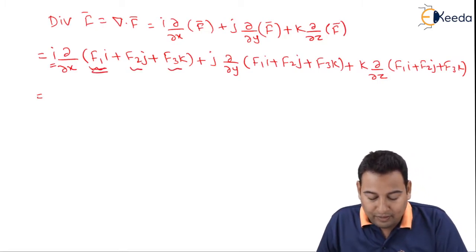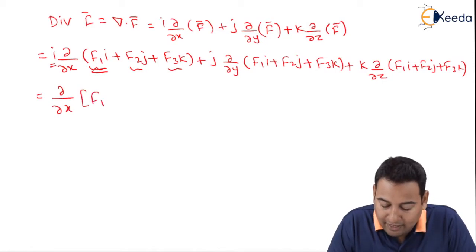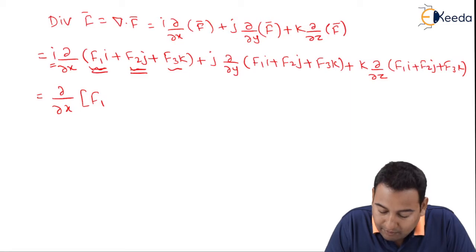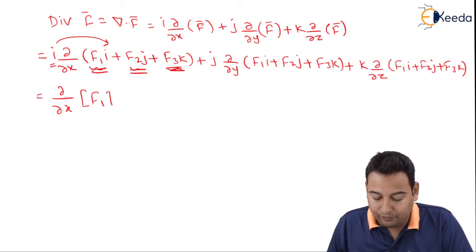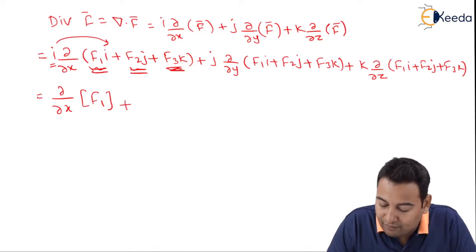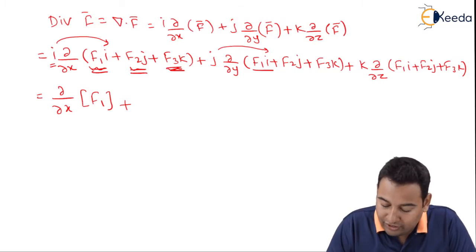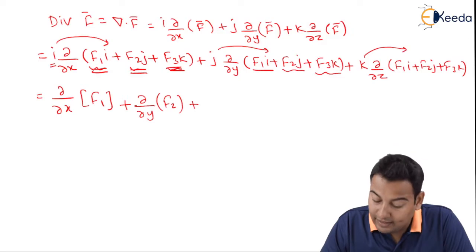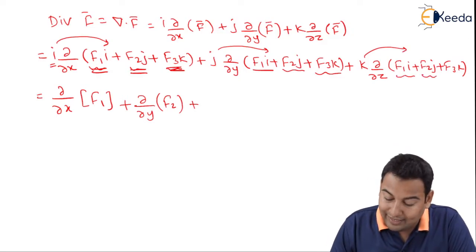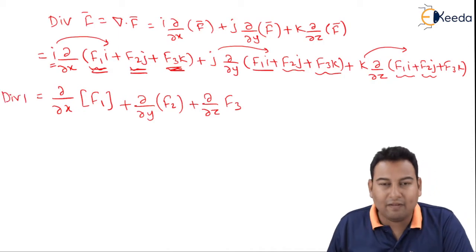Opening the bracket: i multiplied into f1 gives i·i, which means ∂/∂x of f1. i multiplied into f2·j gives i·j = 0. i multiplied into f3·k gives i·k = 0. Similarly for j: j·i = 0, j·j = 1, so we get ∂/∂y of f2. And j·k = 0. For k: k·i = 0, k·j = 0, k·k = 1, so we get ∂/∂z of f3. This is the formula for divergence of f̄ — no need to derive in the exam, you can directly write it down.